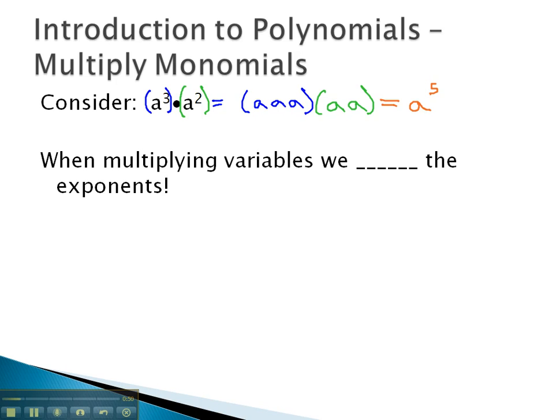I want to see if we can notice a pattern to help us skip this middle step when multiplying a cubed times a squared. How could we have looked at the exponents of 3 and 2 and known we were going to end up with 5 total? Well, you might notice that 3 plus 2 equals 5. When multiplying variables together, we add the exponents.